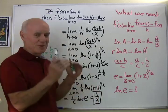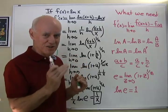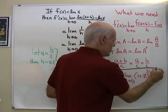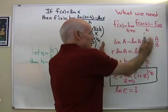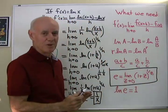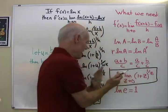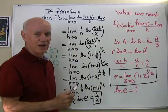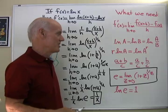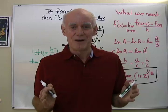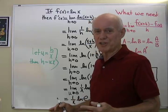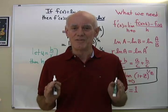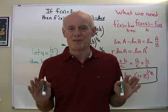The whole derivation hinges on using log properties to get the expression into a form matching the definition of e, then recognizing that ln(e) = 1, leaving 1/x. So there's the derivation that y = ln(x) has derivative 1/x. Go back to the intuitive graph approach, then come back to this derivation step by step. The whole purpose is just to be able to say: I believe the derivative of ln(x) is 1/x.